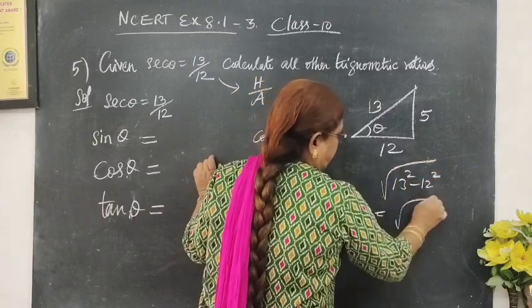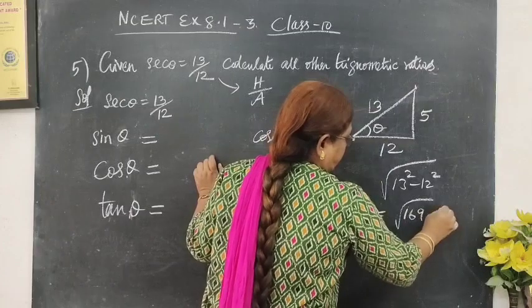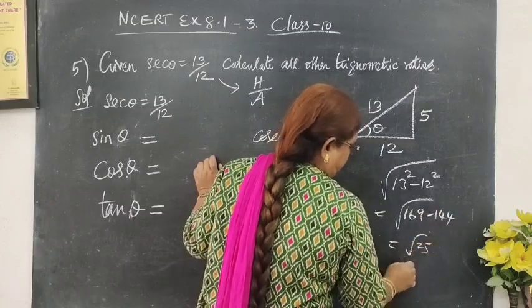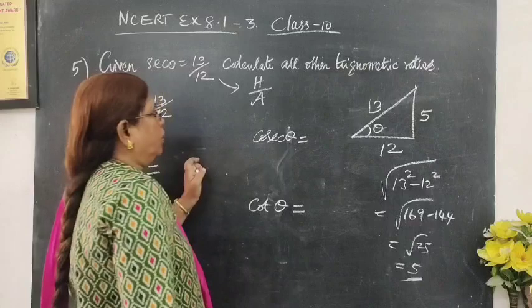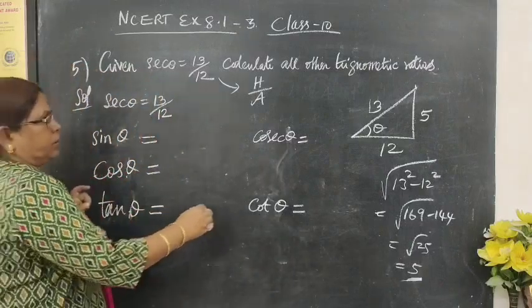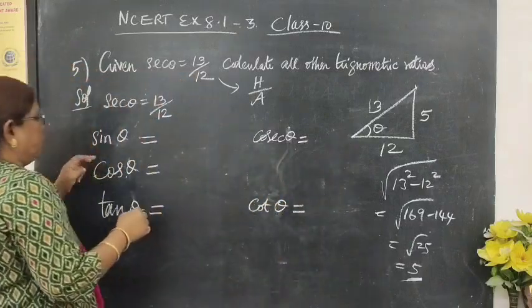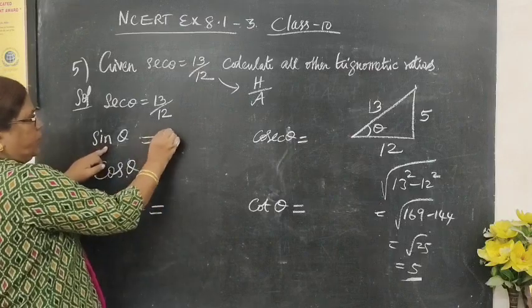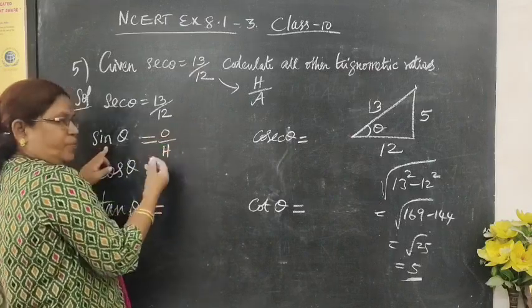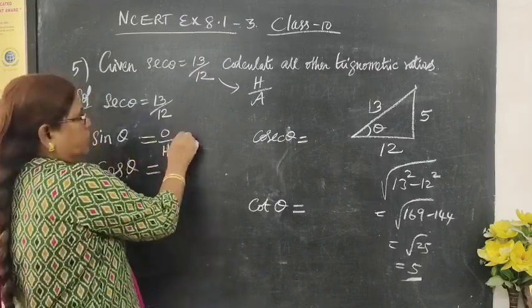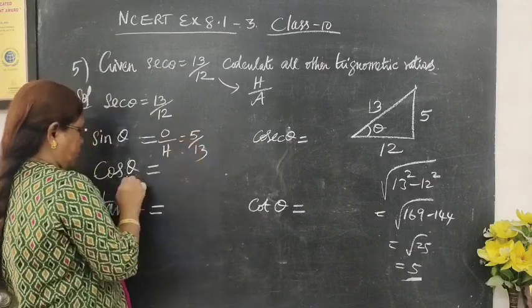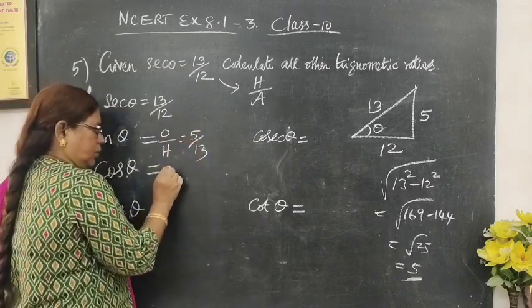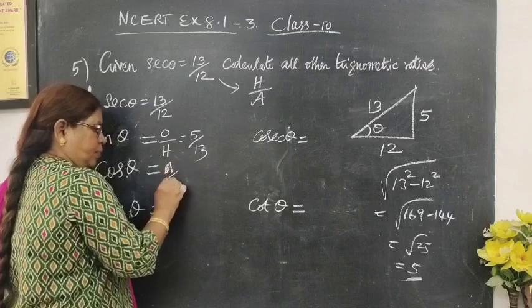Now we calculate all ratios. This is 5. Sin theta is opposite by hypotenuse, so opposite is 5 by 13. Then cos theta is adjacent side by hypotenuse, adjacent side is 12 by 13.